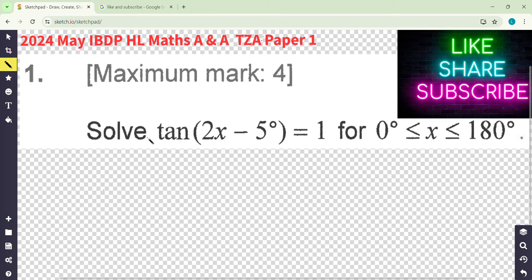Question number 1. Solve tan(2x - 5°) = 1 for this range. First of all, be careful, look at this double angle. So actually, the solution should be for 2x up to 360 degrees. So when you find the solution, find more.